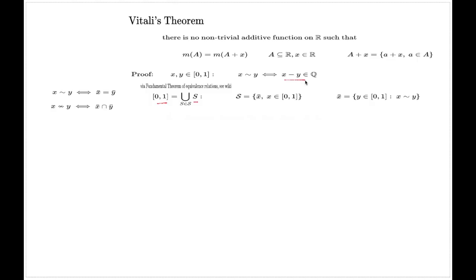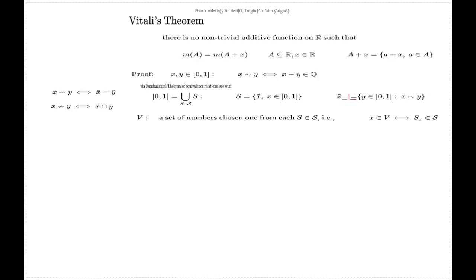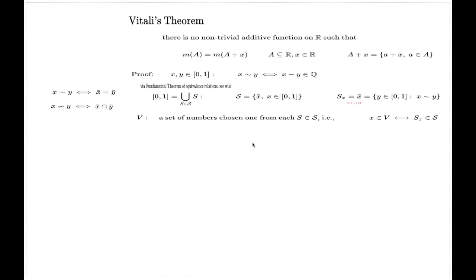Now, given this splitting of the [0,1] interval into equivalence classes with this particular choice of equivalence, I can construct what's called the Vitali set — that's the main idea of the Vitali proof. I define a set V to be a set of numbers chosen one from each equivalence class, which means there is a one-to-one correspondence between the elements of V and the corresponding equivalence classes, denoted S sub x for each x.